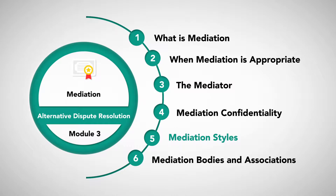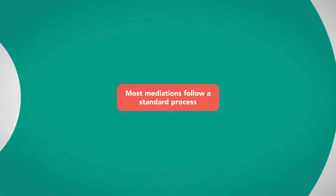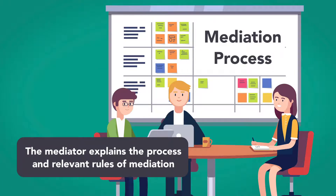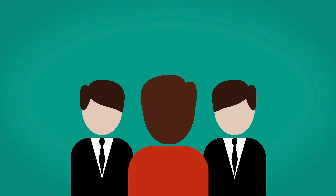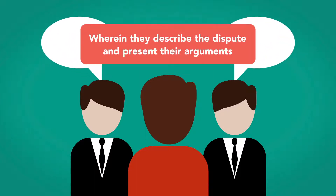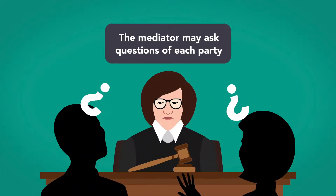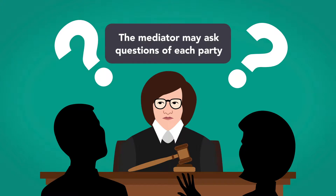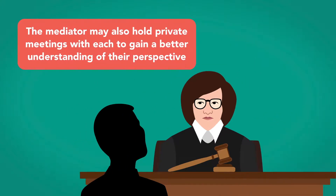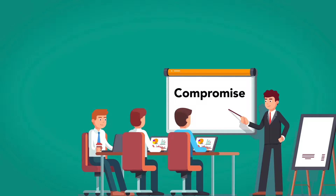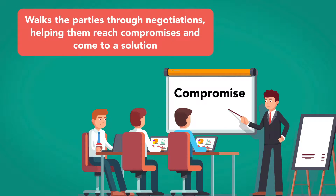Mediation Styles. Most mediations follow a standard process. During the introduction, the mediator explains the process and relevant rules of mediation. The mediator then allows each party to make a statement, wherein they describe the dispute and present their arguments. In an effort to gain a better understanding of the conflict, the mediator may ask questions of each party. If necessary, the mediator may also hold private meetings with each to gain a better understanding of their perspective and identify areas for possible compromise. The mediator then takes all gathered information and walks the parties through negotiations, helping them reach compromises and come to a solution.